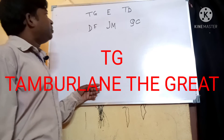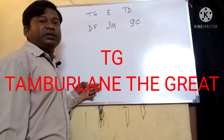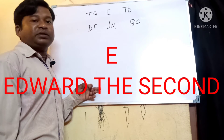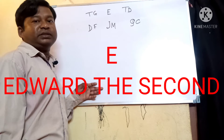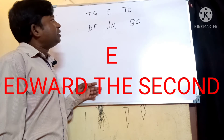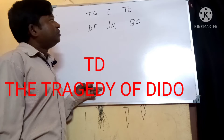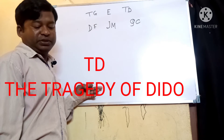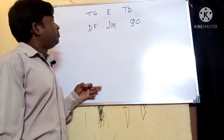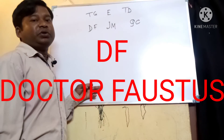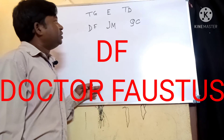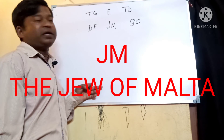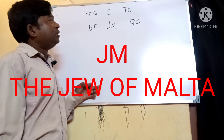TG is for Tamburlaine the Great, E for Edward the Second, TD for The Tragedy of Dido, DF for Doctor Faustus, JM for The Jew of Malta, QC for...